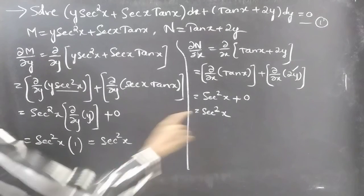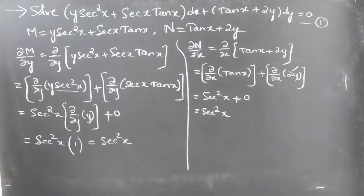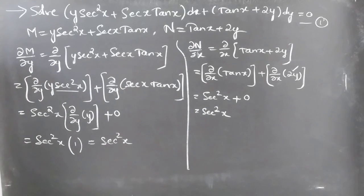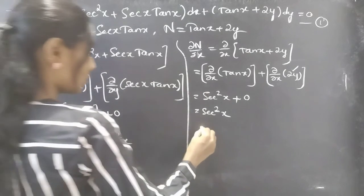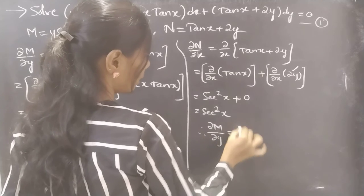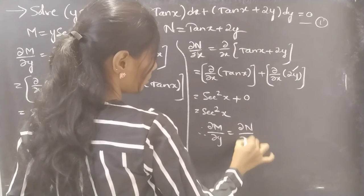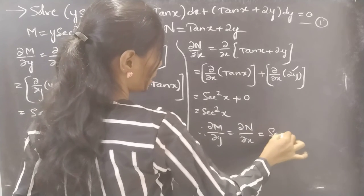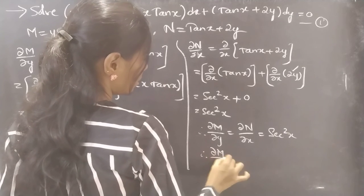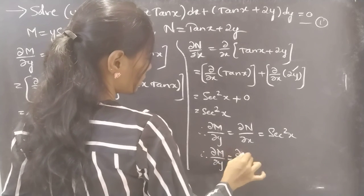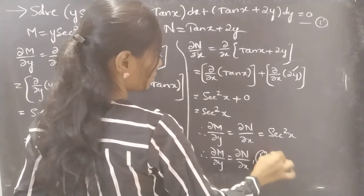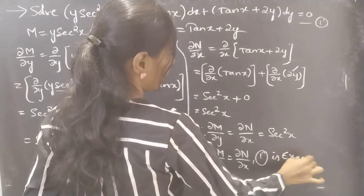By observing these two results, we can say that the partial derivative of M with respect to y equals the partial derivative of N with respect to x, both equal to secant square x. This shows that the given differential equation is an exact equation.